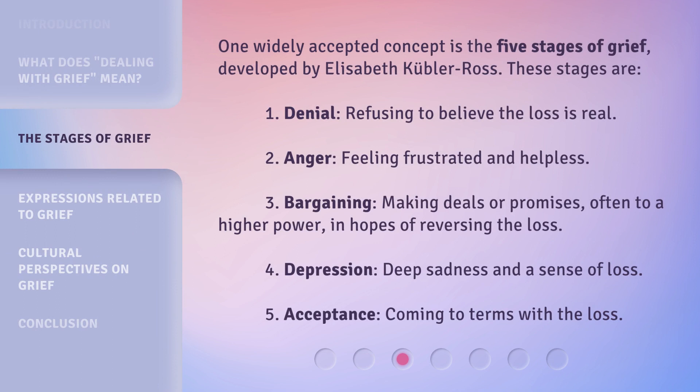One widely accepted concept is the five stages of grief, developed by Elizabeth Kubler-Ross. These stages are: 1. Denial — refusing to believe the loss is real. 2. Anger — feeling frustrated and helpless. 3. Bargaining — making deals or promises, often to a higher power, in hopes of reversing the loss.